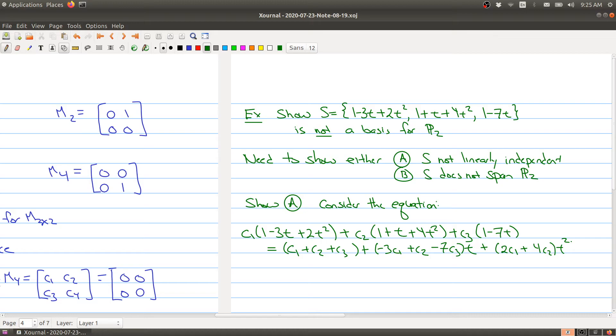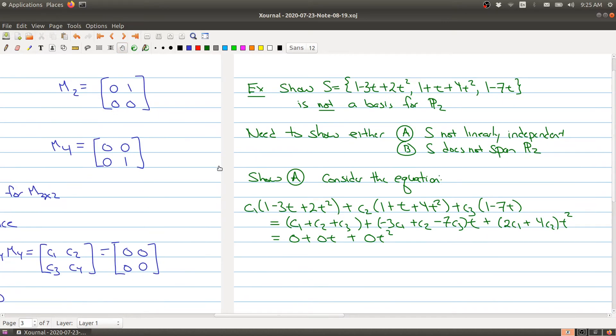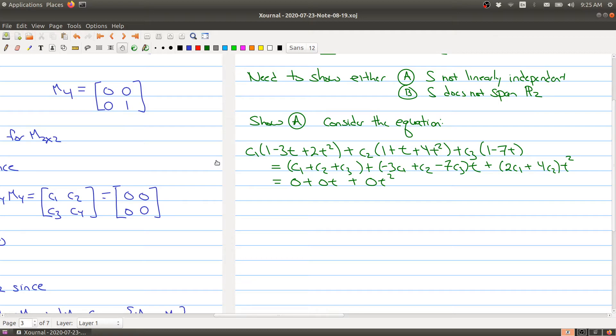And then we take all the coefficients of t squared. So we have 2c1 plus 4c2 times t squared. And we want this equal to the zero polynomial. So we want to look for all the c's that allow me to do this. If there's only the trivial solution, then it's linearly independent. But we're going to show that it has a non-trivial solution. And we saw something like this before, is that we're actually cooking up a system of linear equations.